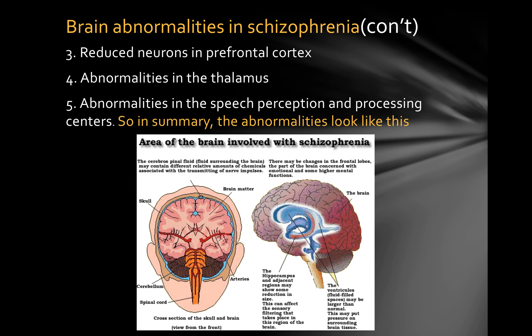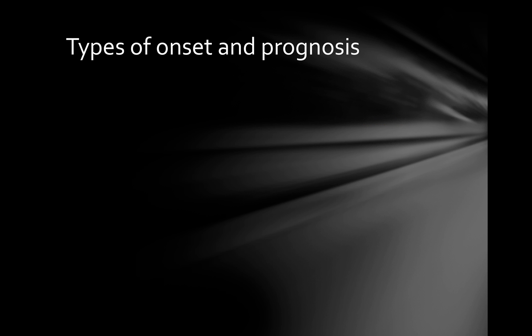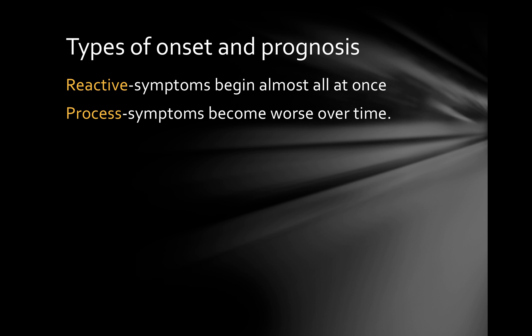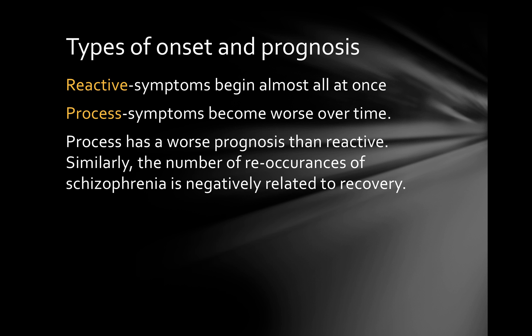The hippocampus and adjacent regions are reduced in size. Structures like the hippocampus and thalamus that usually process and filter information are damaged, which leads to a common complaint of schizophrenics — that everything hits them with equal force and they're not able to filter out things in the environment. Types of onset include reactive, where symptoms begin at once, and process, where symptoms become worse gradually over time. Process onset actually has a worse prognosis than reactive onset.